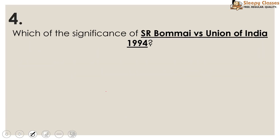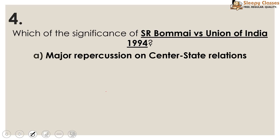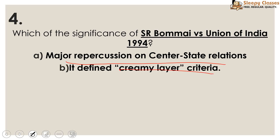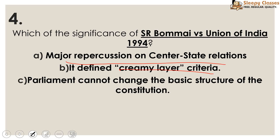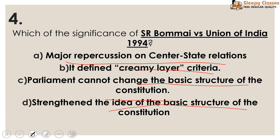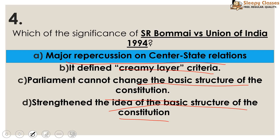Next question: what is the significance of SR Bommai vs Union of India 1994? Options include: it had major repercussions in center-state relations; it defined the creamy layer criteria; Parliament cannot change the basic structure; and it strengthened the idea of basic structure. Your answer is that it had major repercussions on center-state relations. SR Bommai is related to center-state relations. Whether the question comes in prelims or in center-state relations topics, you should be able to identify this case.